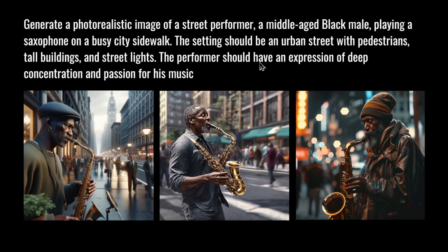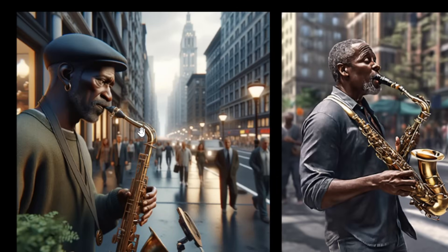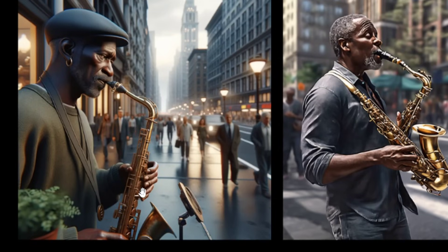The next round is a photorealistic human. The prompt: 'Generate a photorealistic image of a street performer — a middle-aged Black male playing a saxophone on a busy city sidewalk. The setting should be an urban street with pedestrians, tall buildings, and street lights. The performer should have an expression of deep concentration and passion for his music.' The first image shows the man wearing a cabbie hat with an earring, playing a sax that looks like it has a speaker attachment — and I'm noticing six fingers on his hand.